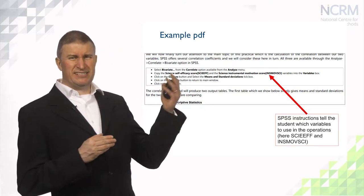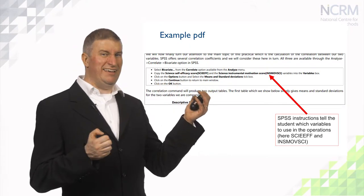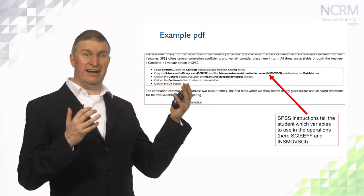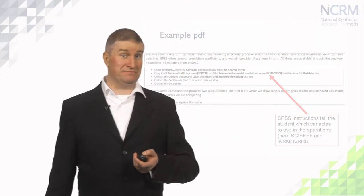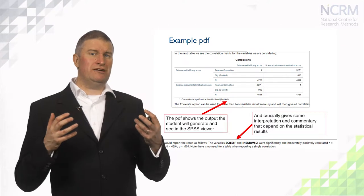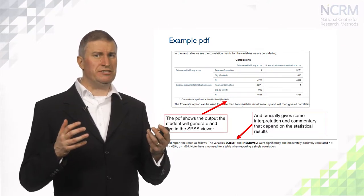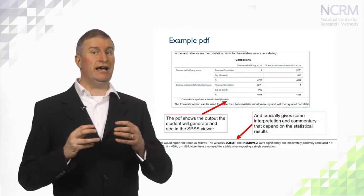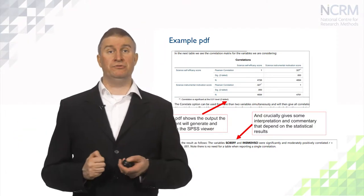Scrolling lower down this PDF we can see SPSS instructions that tell the student which variables to use to calculate the correlation coefficient — in this case the variables are PSIEEEFF and INSMONMOV PSI from the PISA data set. The PDF then shows the output as it will appear in SPSS, and crucially gives some interpretation of the size and significance of the correlation found.